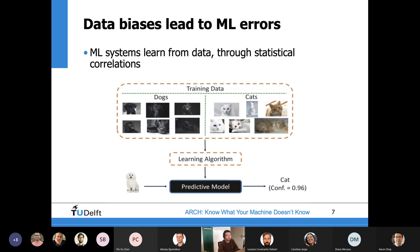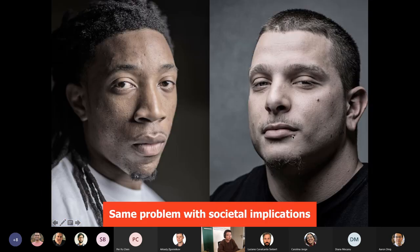This example shows — despite being very simple — the intrinsic problem with machine learning systems: they learn from data by picking up statistical correlations, such as the correlation between color and the animal. Those correlations are not really reliable. The same problem can happen with much bigger implications depending on where the application is.